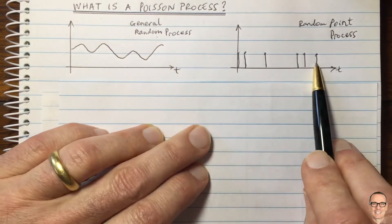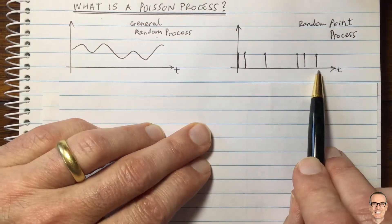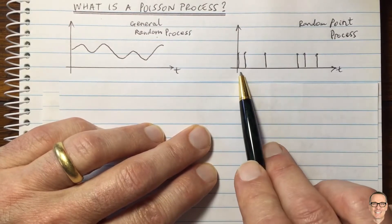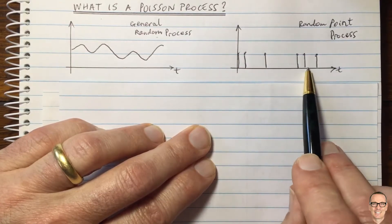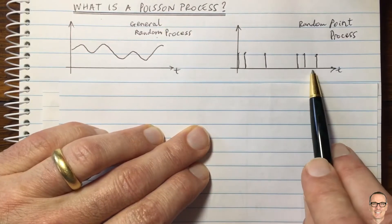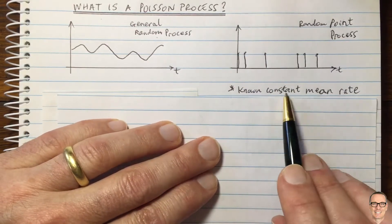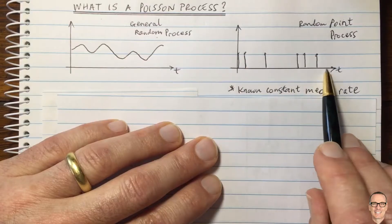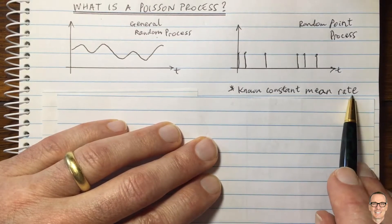An example could be people arriving at a bus stop — the times when they arrive. Or packets arriving at a network switch, or mobile phone users wanting to start a phone call in a mobile cell. These are the times when those events happen. A Poisson process looks at events, and these events occur at a constant, known mean rate. This means they are random, but over a certain period of time there is a known mean rate of those events happening.